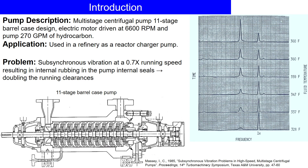The pump was spinning at 6600 rpm, pumping 270 gallons per minute of hydrocarbon. The sub-synchronous vibration, which occurs at 0.7x, was causing the shaft to rub against the internal seals. The problem was compounded as the fluid temperature increased.